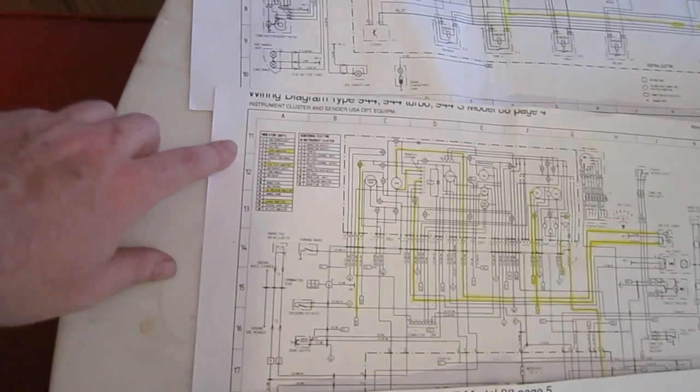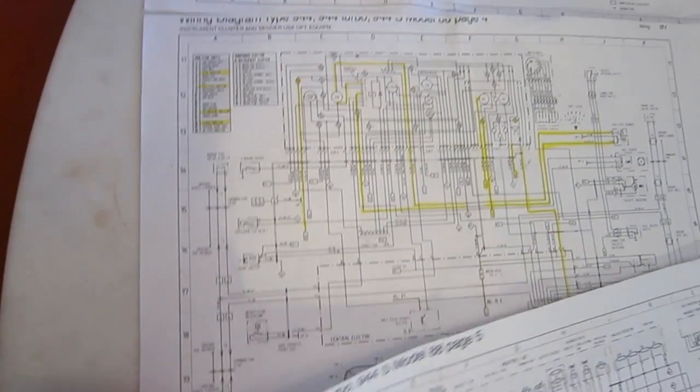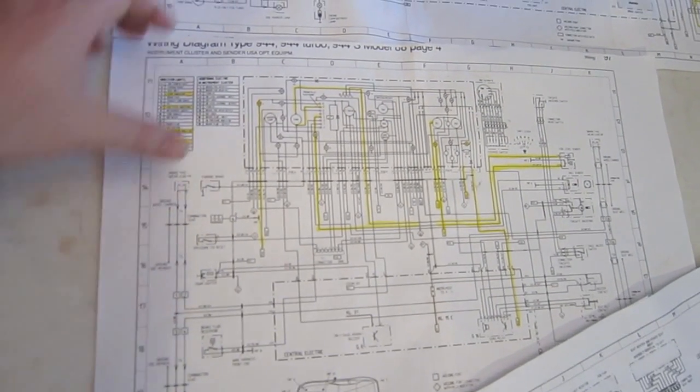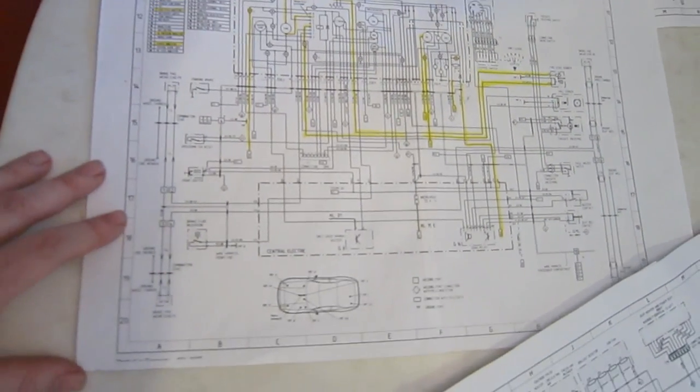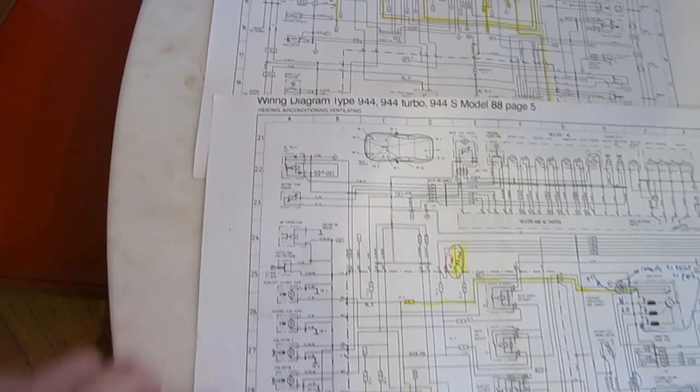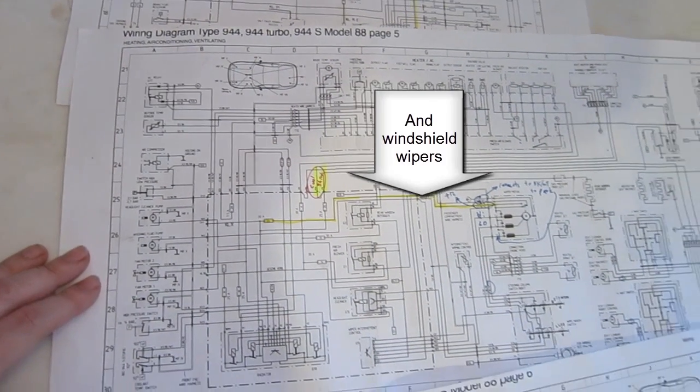Now the next one here starts at row 11 and goes from 11 to 20, and this is the instrument cluster and dash and things like that. And then the next segment goes from 21 down to 30, and this one is heating, air conditioning, and ventilation.